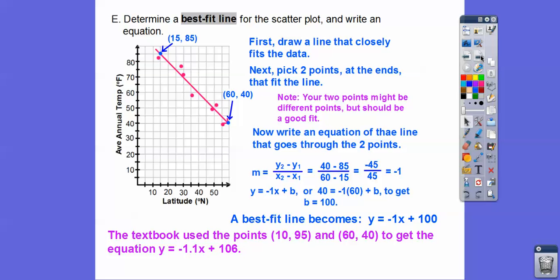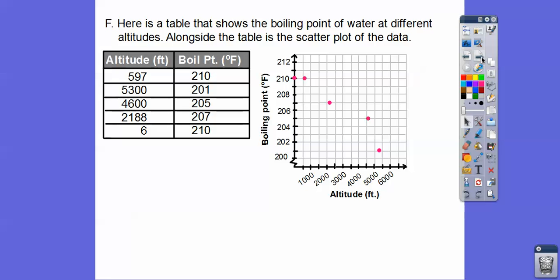The textbook uses the points 10, 95 and 60, 40. That gave them a slope of negative 1.1 and a y-intercept of 106 — really close to our answer. In the next lesson, part two, we're going to use these best-fitted line equations to make some predictions.